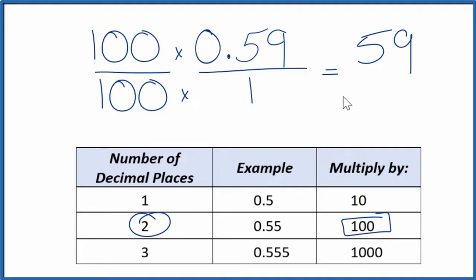So 100 times 1, that equals 100. And we have our fraction. We can't simplify this any further. So this is our fraction.